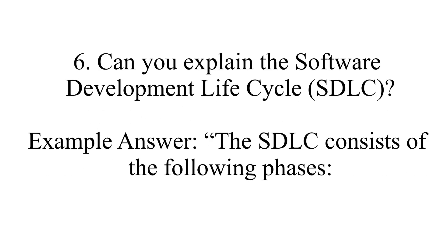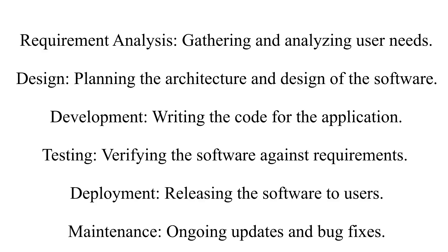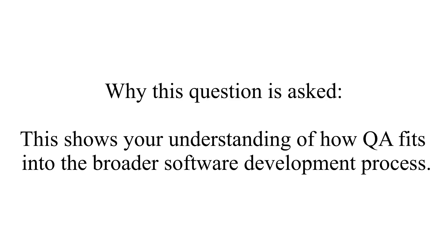Question six: Can you explain the software development life cycle? The software development life cycle consists of the following phases: requirements analysis — where you gather and analyze user needs; design — planning the architecture and design of the software; development — writing the code for the application; testing — verifying the software against requirements; deployment — releasing the software to users; and maintenance — ongoing updates and bug fixes. This shows your understanding of how QA fits into the broader software development process.